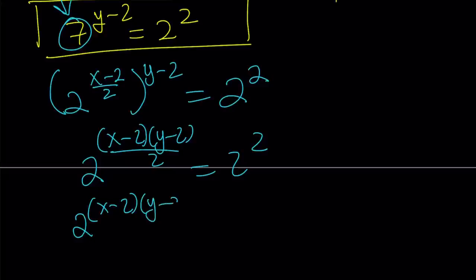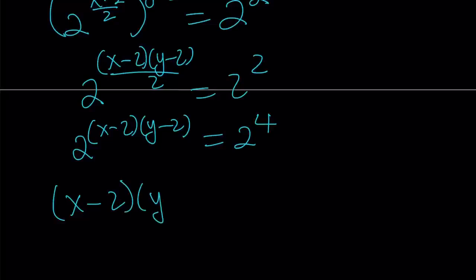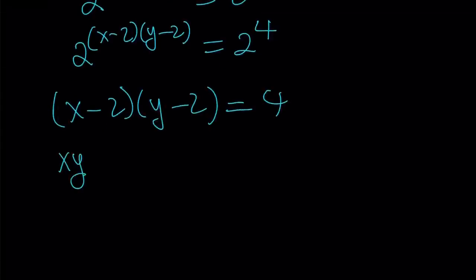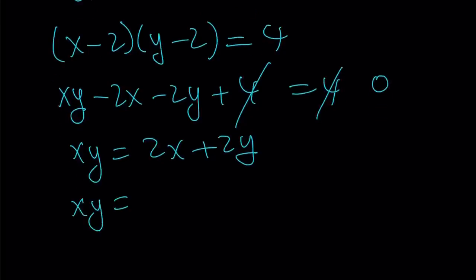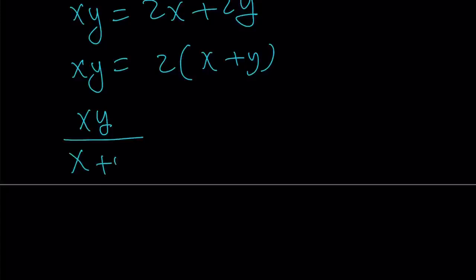And now, this gives me 2 to the power x minus 2, y minus 2 equals 2 to the power 4. And since the bases are equal, exponents are equal. So, we can safely say that x minus 2 times y minus 2 is equal to 4. And if you distribute this, you're going to get something amazing. Let's go ahead and do it. xy minus 2x minus 2y plus 4 equals 4. 4 cancels out. We end up with 0. From here, I can go ahead and isolate xy, and put the 2x and 2y on the other side. And then, I can take out a 2, and divide both sides by x plus y. Having been given that x plus y is not equal to 0, xy over x plus y is equal to 2, and that's what I was looking for.